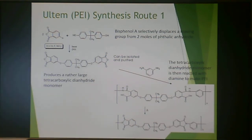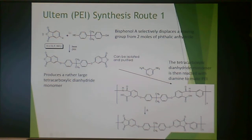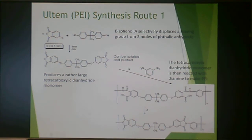I'm going to show you a couple of synthesis routes. I'm not going to require you to remember these, but bisphenol A shows up again. It's used because it's a commodity chemical and inexpensive. Phthalic anhydride, shown here, is also a commodity chemical. You create a tetracarboxylic dianhydride monomer from these, isolate and purify it, then react it with a diamine to make polyetherimide. You get the amic acid intermediate, heat it up to close the rings, and get the Ultem route. This ring-closing step is very energy-intensive — it takes a long time and a lot of heat.